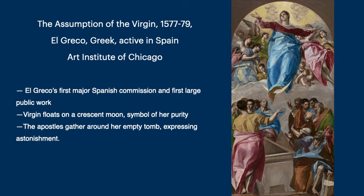Finally we come to the Assumption of the Virgin Mary once again, and I absolutely had to include El Greco's piece — a magnificent piece in the Art Institute of Chicago. This was his first major Spanish commission, his first large public work. Here the Virgin floats on a crescent moon, symbol of her purity, and the apostles gather around her empty tomb expressing astonishment.